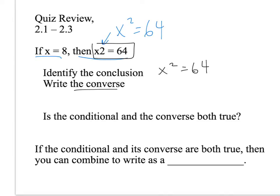The converse is switching the conclusion and the hypothesis. So the converse is: if x squared equals 64, then x equals 8.